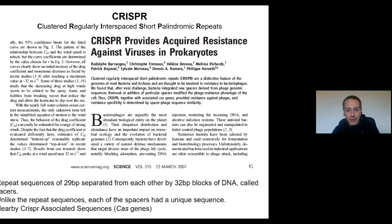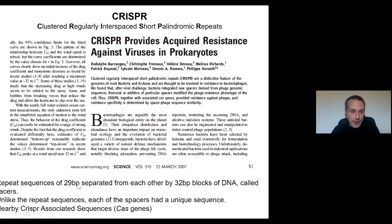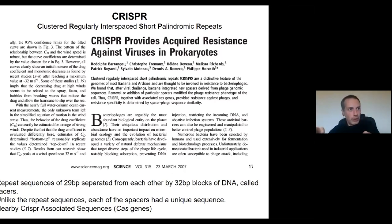CRISPR was found and, as Gunther was saying, it's like a protection mechanism of bacteria. It was found because of a very basic interesting question — researchers found that in bacteria there were sequences that were repeated, with about 29 base pairs, separated by 32 base pairs that were different.